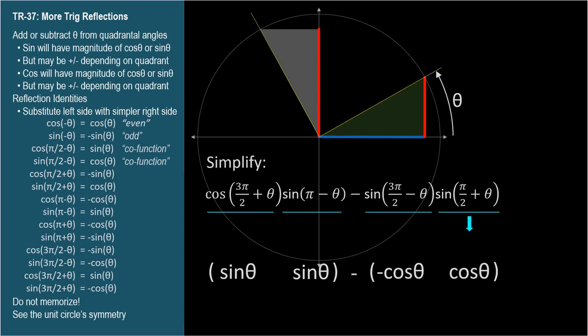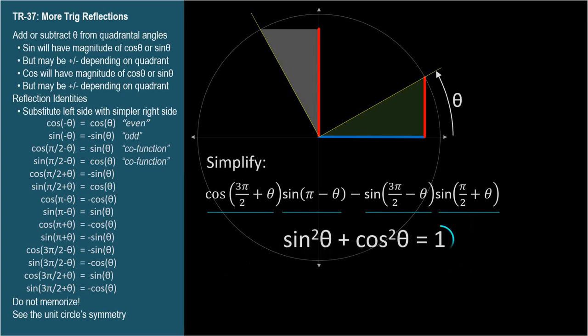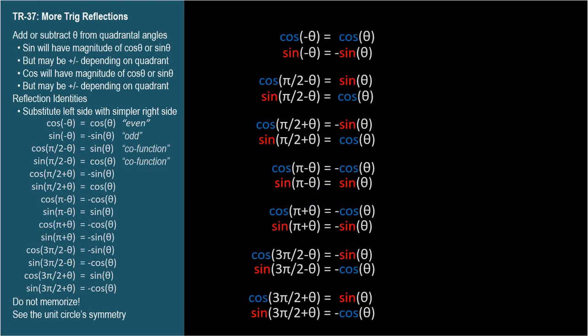Being careful with our signs, these expressions simplify to sine squared theta plus cosine squared theta, which we know equals 1. So we have 14 reflection identities, none of which need to be memorized, all of which can be seen in the symmetry of the unit circle.